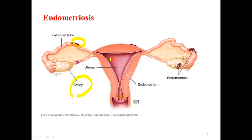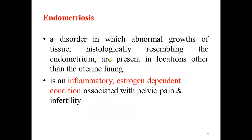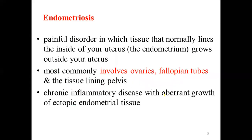Endometriosis is one of the most common causes of infertility in the female population. It is a disorder in which there is abnormal growth of tissue that historically resembles the endometrium but is located outside the uterine lining. It is an inflammatory condition, mostly estrogen-dependent, and is associated with pelvic pain and infertility. All females in the reproductive age are at risk.